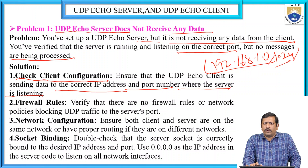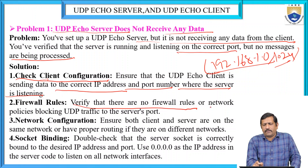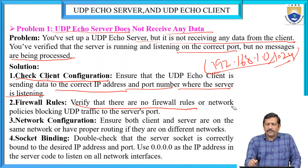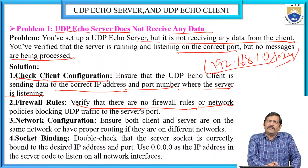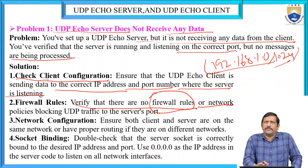Next, apply firewall rules. Verify that there are no firewall rules on the network that are blocking UDP traffic to the server port. No firewall rules should be blocking the communication. This is our second solution step.